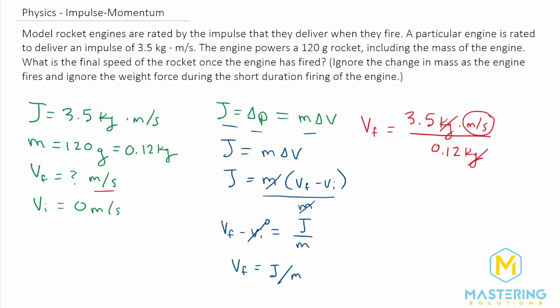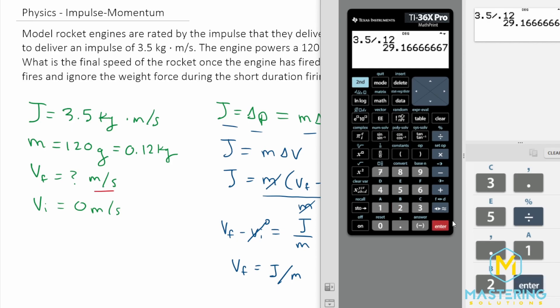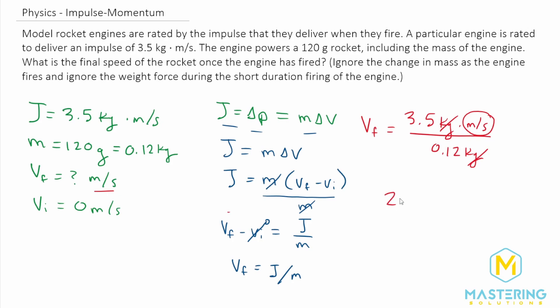So let's plug that into our calculator. 3.5 divided by 0.12, and as we round that, we'll have 29.17, or V final is equal to 29 meters per second.